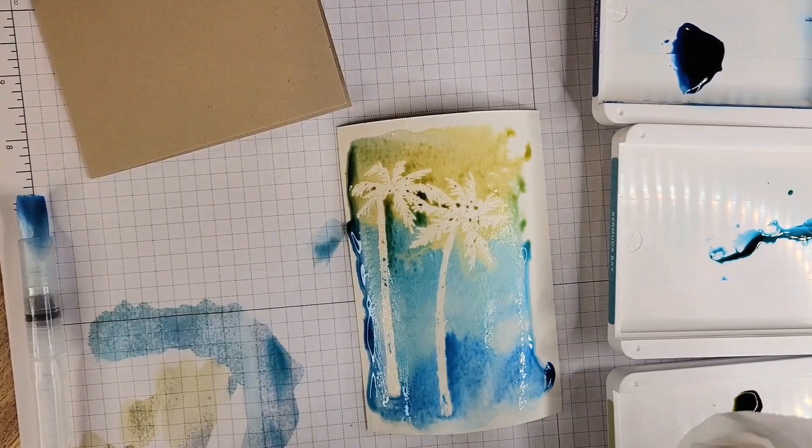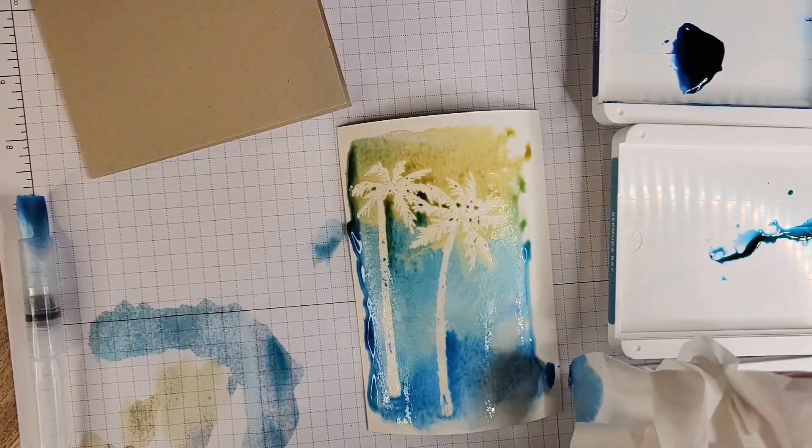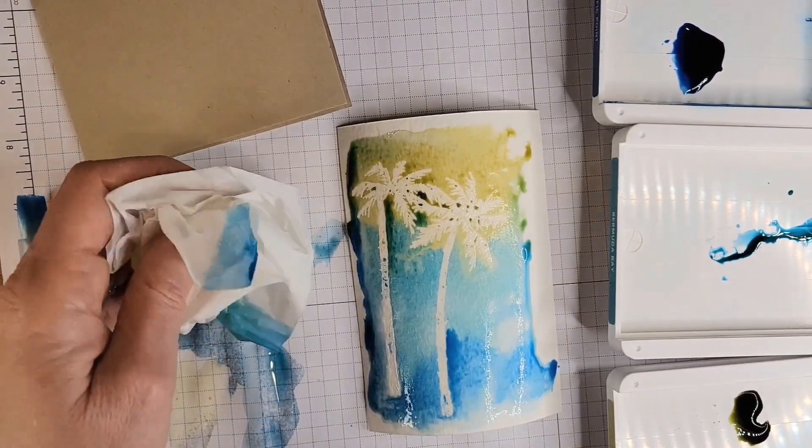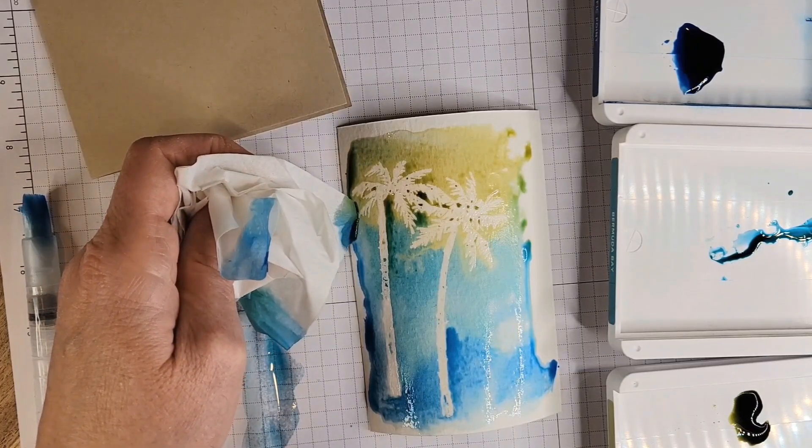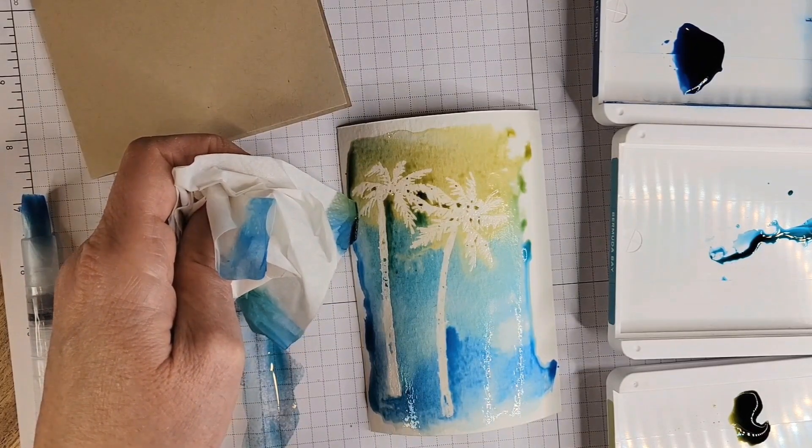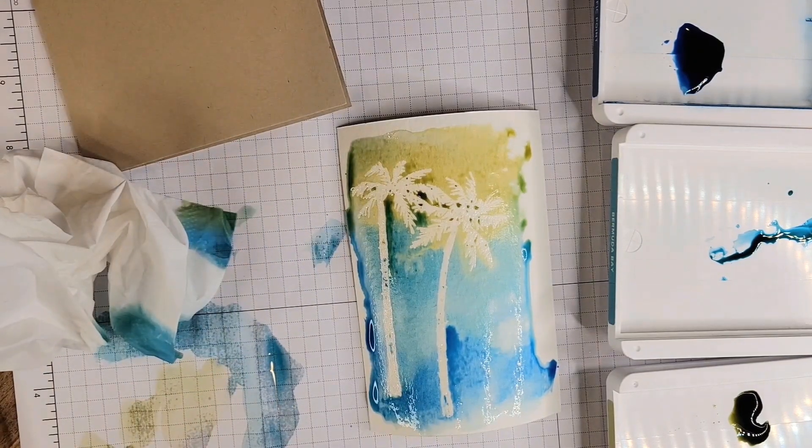And the colors are staying vibrant and individual, but then there's still some merging together, which looks really cool. That's what I wanted. So just mopping up those colors a little bit, and now we can speed up the drying a little bit with the heat tool.